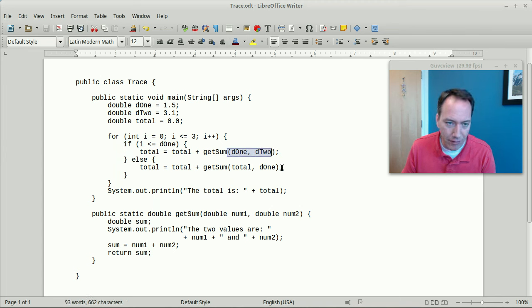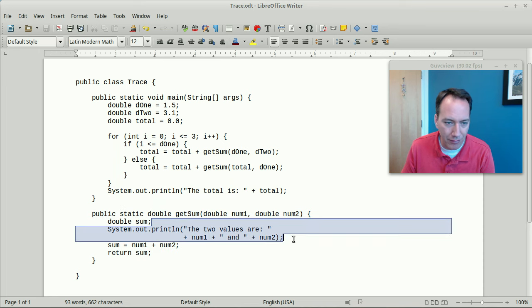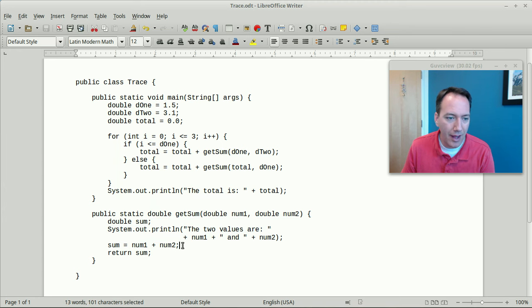But the parameters are different, or rather the argument values, right? Now getSum is pretty straightforward. All it does is prints out what the two values are, num1 and num2, adds them up and returns the sum. So with that introduction, let's go to paper and see what happens.